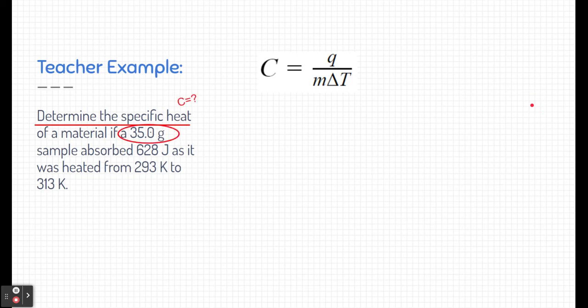We see 35 grams here. We need to know that grams is a measurement of mass. It says the sample absorbs 628 joules. Joules is a measurement of energy, and it's absorbing that energy, so this is Q. And it was heated from 293 Kelvin to 313 Kelvin. That's a change in temperature designated by this tiny little delta, or the triangle, which represents a change in temperature.